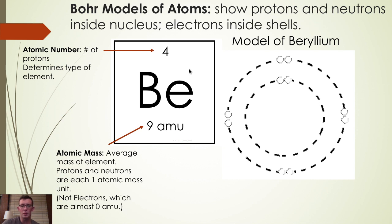So if we wanted to create a Bohr model of an element just from its tile on the periodic table — take for instance beryllium — we would first look at the atomic number of that element, which tells us the number of protons. In this case beryllium has four protons inside of it.